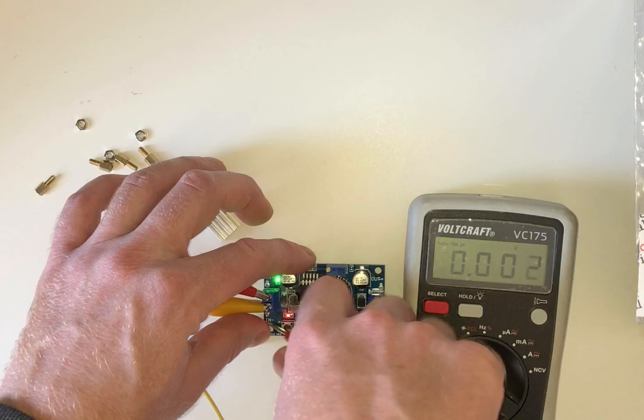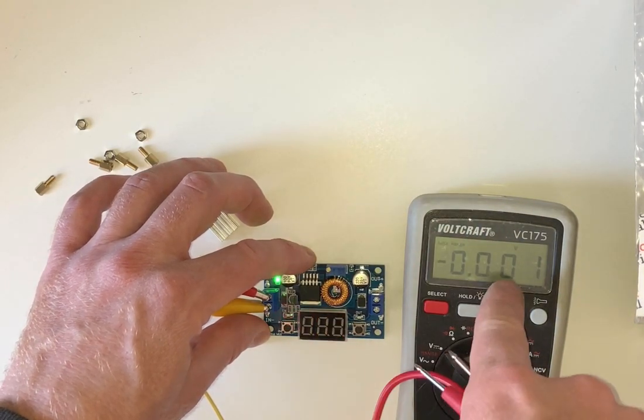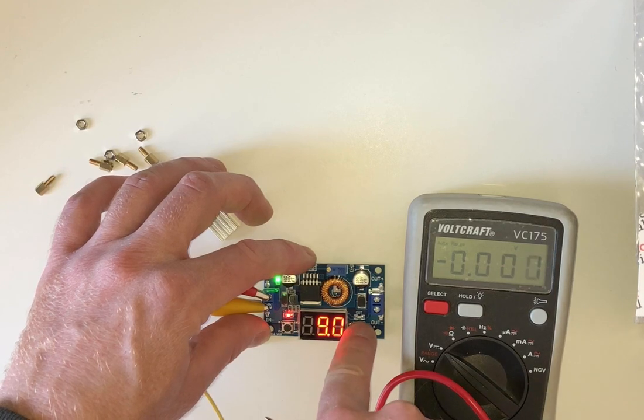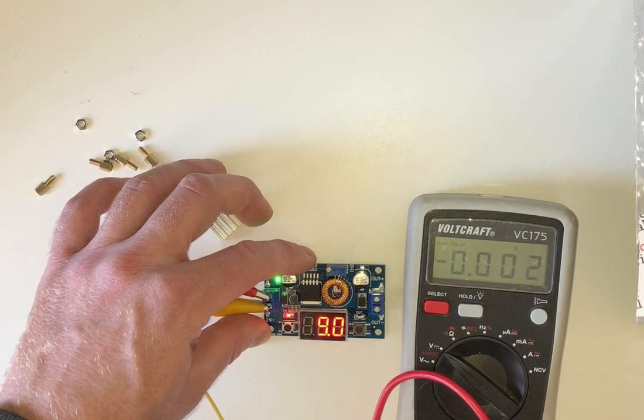And then you measure with your multimeter across here and you make sure that this number matches what's on the multimeter. And then you hold for three seconds and then it sets.